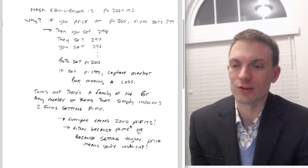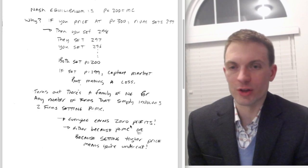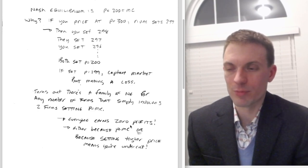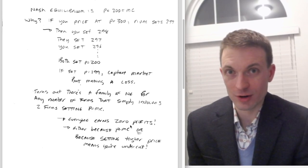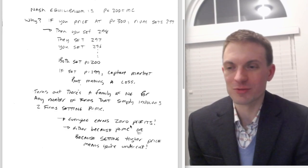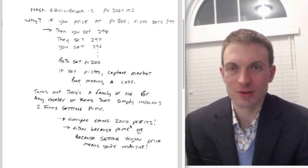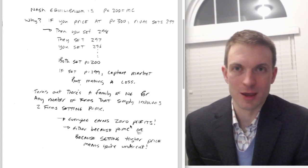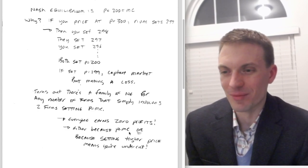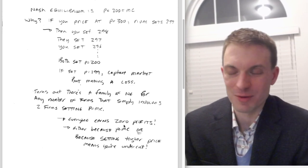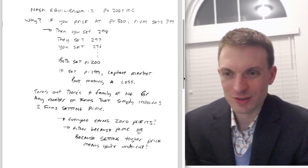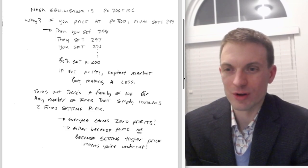So everyone earns zero profits regardless of what they do as long as two people are setting price equal to marginal cost. This gives rise to what's called the Bertrand paradox, because you get the perfect competition outcome with only two firms. Usually we think of markets becoming more competitive as you add additional firms. Actually, in this market or in this case, as long as you have two firms setting price equal to marginal cost, it doesn't matter if you add like an unlimited number of firms—the price is gonna remain at this equilibrium.